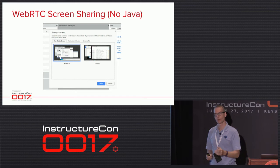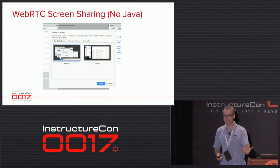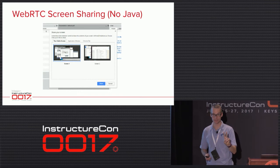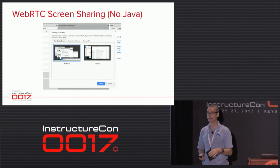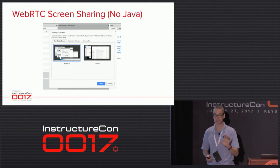Third roadmap item: desktop sharing. We currently use a Java applet because Flash can't look outside the browser and see your desktop. We're going to leverage the browser's WebRTC support to send the user's desktop or an application — meaning it'll be easier to share your desktop, and you can even do it on a Chromebook. There's nothing you need to install using Canvas Conferences — students are not prompted to download and install anything. It just works.